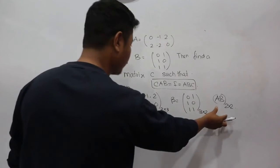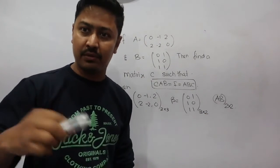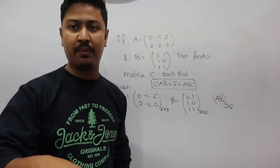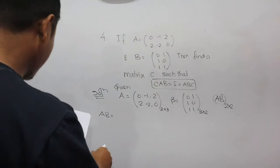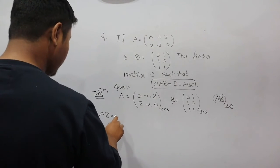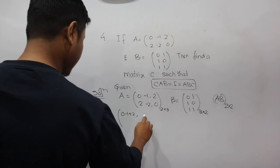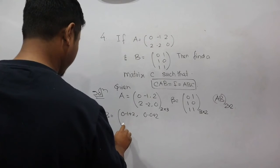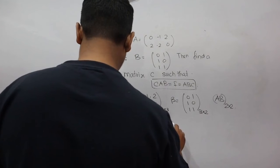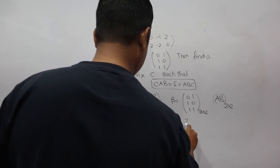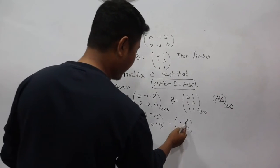So we multiply the matrix A into B. Given A equals [0, -1, 2; 2, -2, 0] and B equals [0,1; 1,0; 1,1]. Computing: first row, first column: 0 minus 1 plus 2 equals 1. First row, second column: 0 minus 0 plus 2 equals 2. Second row, first column: 0 minus 2 plus 0 equals minus 2. Second row, second column: 2 minus 0 plus 0 equals 2. So the result is 1, 2, minus 2, 2.